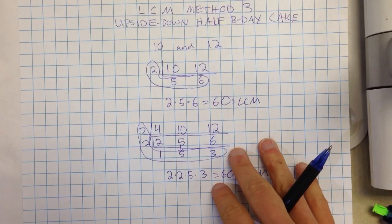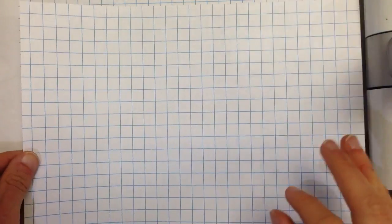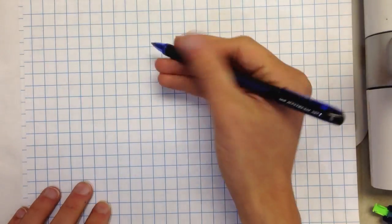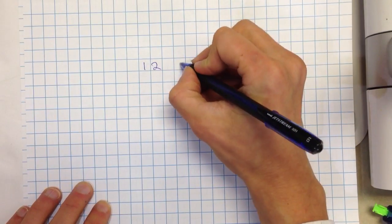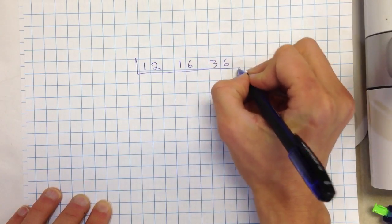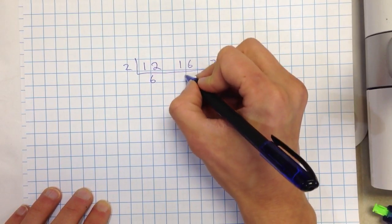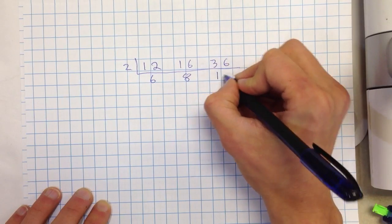So the one that we just did with 12, 16, and 36, we'll show that we can do that too. So if I have 12, 16, 36, I think what can I factor out? I can factor 2 out. So that leaves me with 6, 8, and 18.